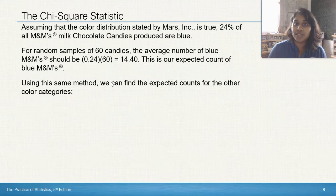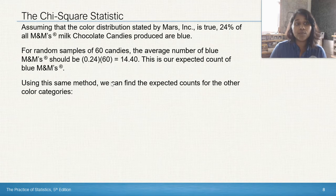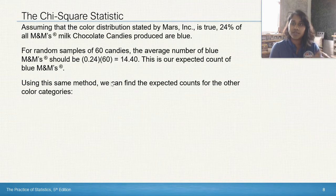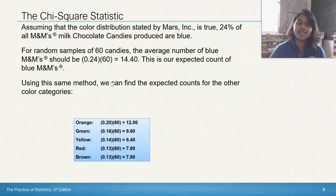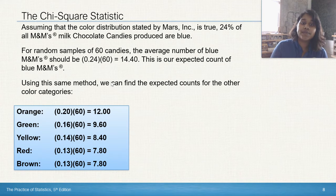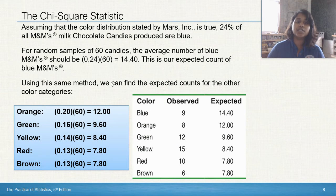Assuming that the color distribution stated by Mars Inc. is true and that 24% of all M&M milk chocolate candies produced are blue, for a random sample of 60 candies, the average number of blue M&Ms should be 14.4, right? So I took the 24% and multiplied it by my sample. In my sample, I should have pulled out 14.4 blues to get that 24% or somewhere near that line. So that becomes our expected count. We can do the same math to find the rest of the expected counts. Ta-da! So now I'm going to create a little table where I'm going to look at my observed, so what I actually saw in that bag of 60 versus the expected, which we just calculated for ourselves.